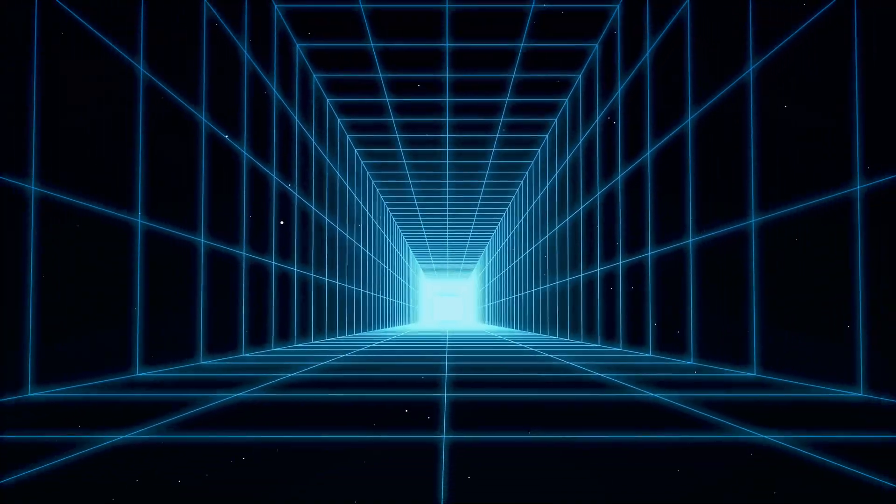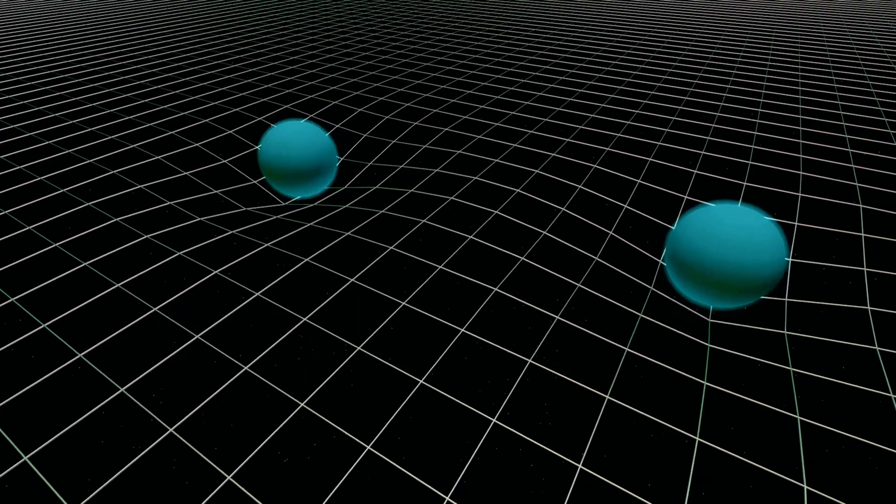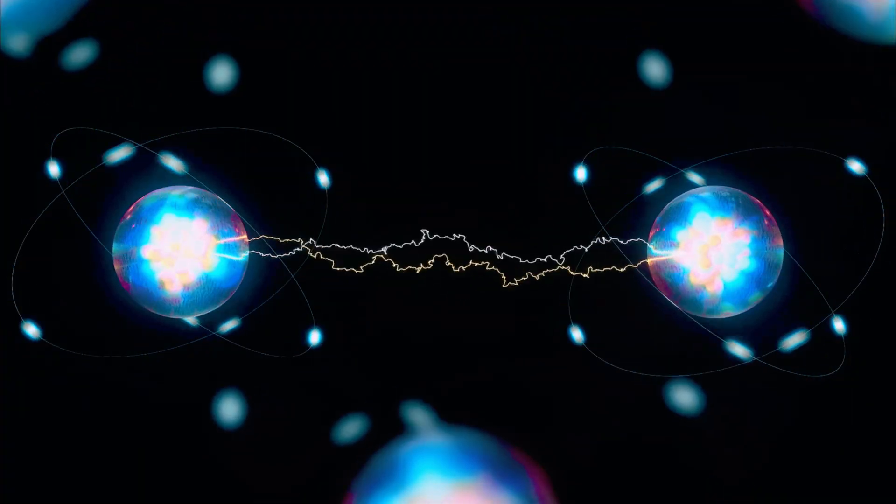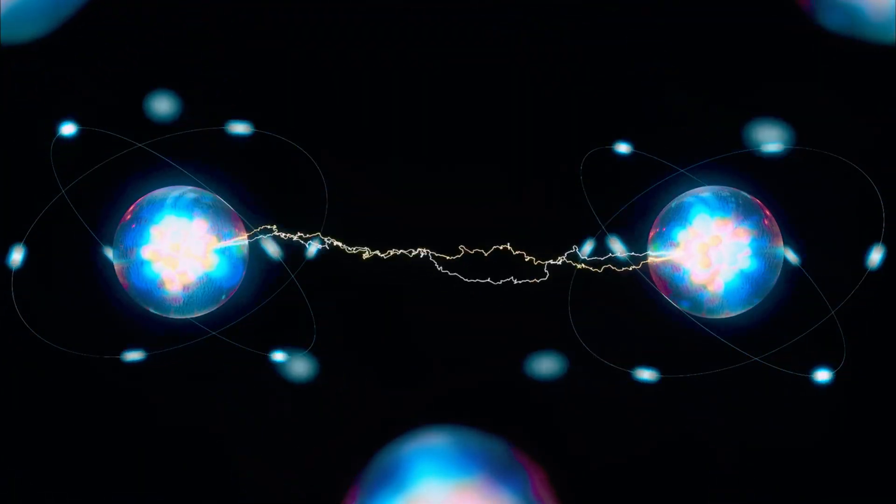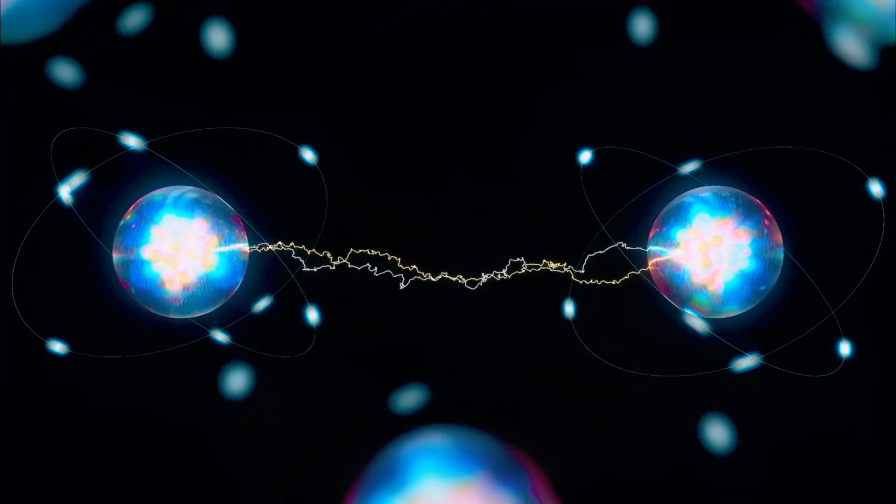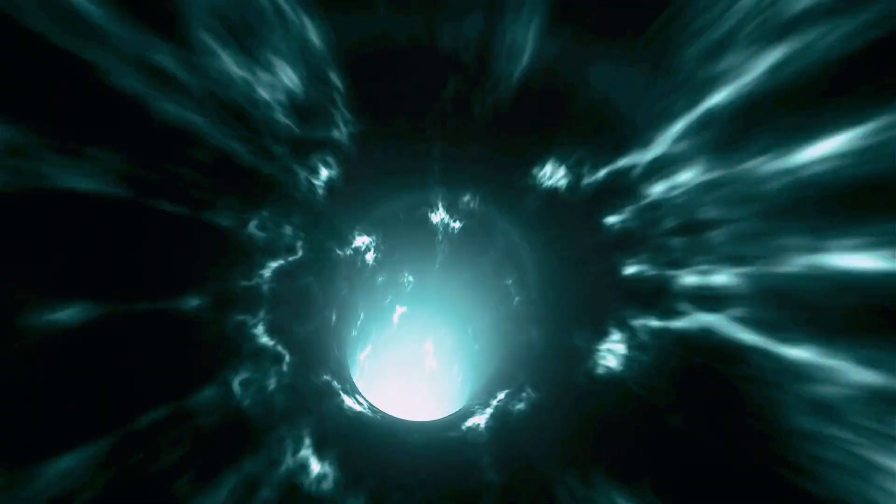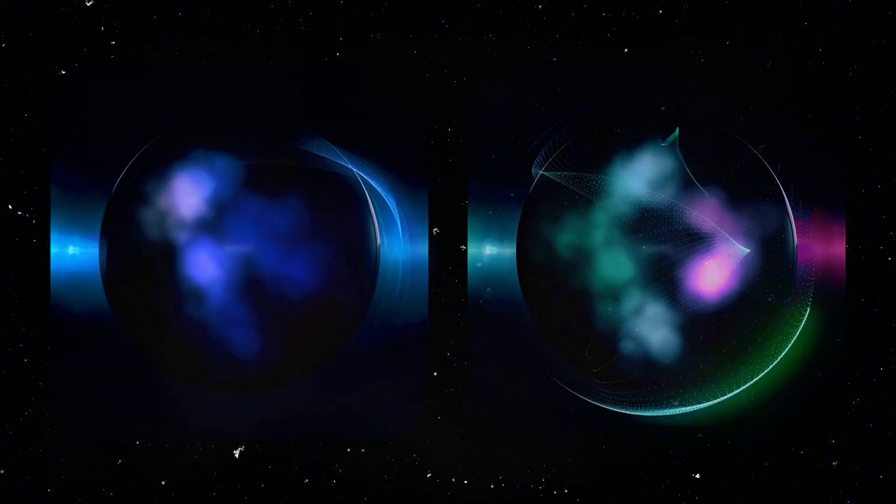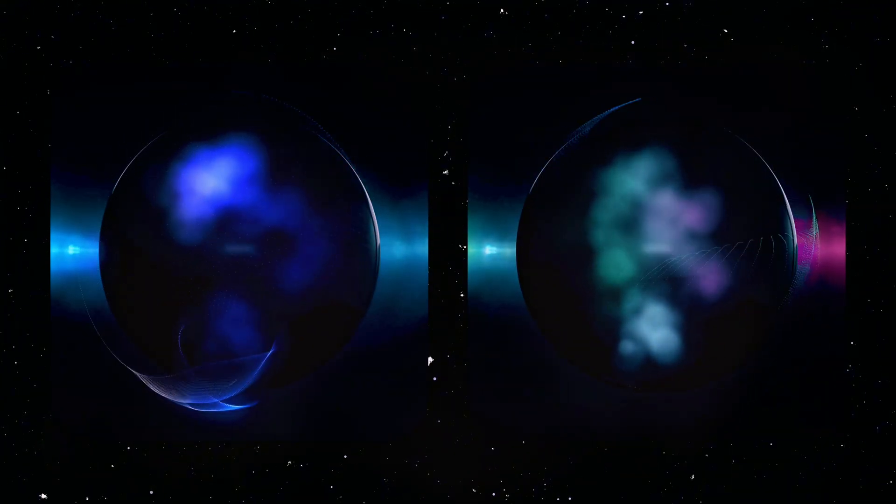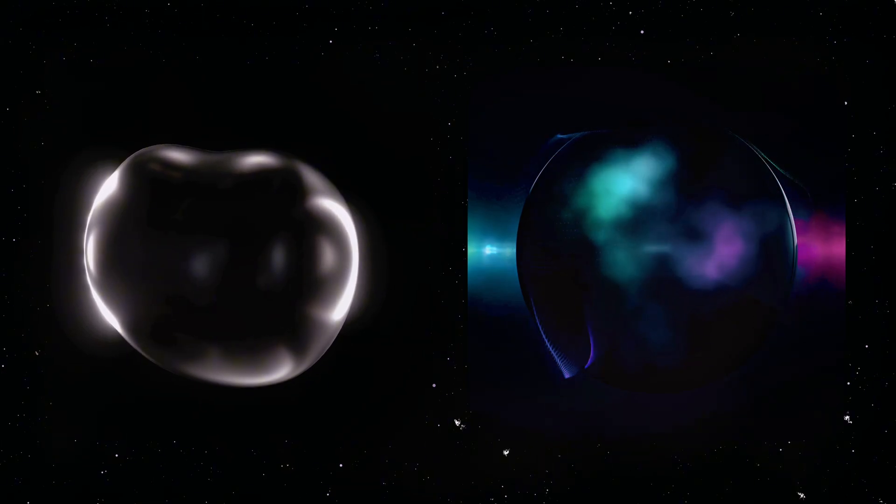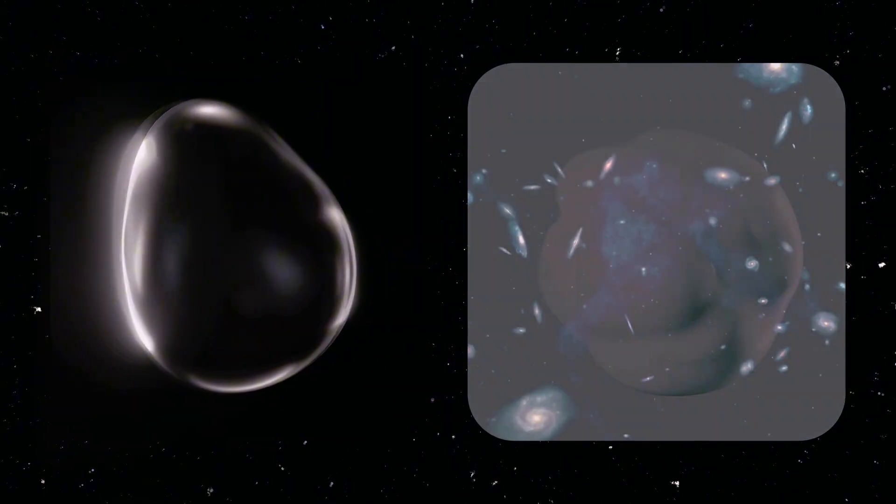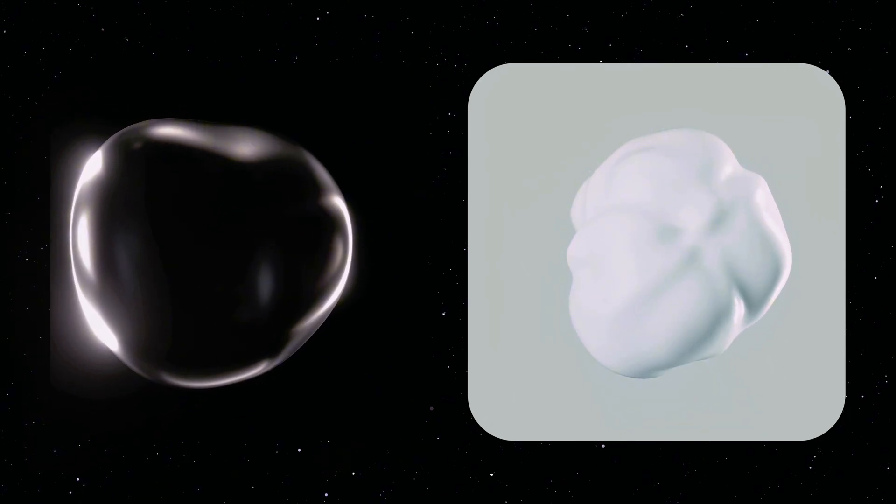Now, when two particles become entangled, their superposition doesn't just apply to each individual particle. It stretches across both particles, binding them together in an intimate quantum connection, no matter how far apart they are. So, when you measure the state of one entangled particle, you instantly determine the state of the other. If the first particle is found to be black, the second, perhaps millions of light years away, will immediately be white, and vice versa.